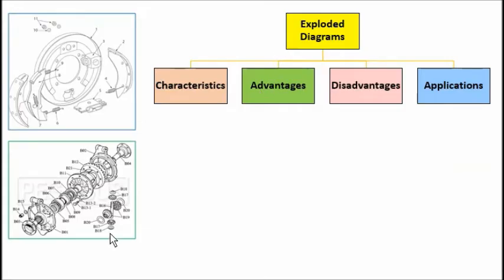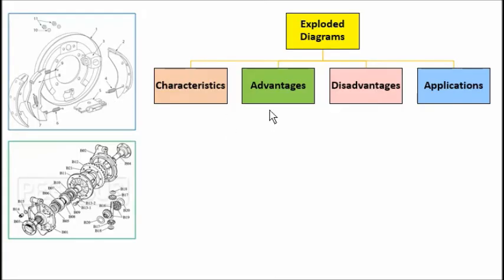Exploded diagrams are like assembly diagrams, but the parts are not assembled together. An assembly diagram shows how everything couples together and what it looks like after fitting. An exploded diagram shows all the parts in an exploded view — blown apart so you can see every single part that goes into the assembly. When assembled, some parts would be hidden. The advantage is it shows every single part. The disadvantage is it doesn't show how it looks when coupled together, and it doesn't show how each part should be made. Applications include complex assemblies with many hidden components.